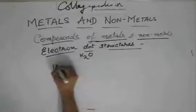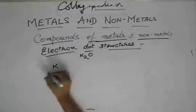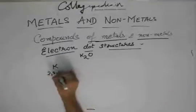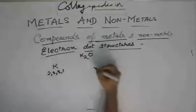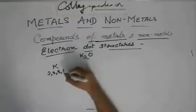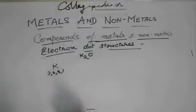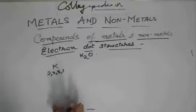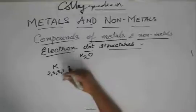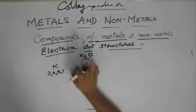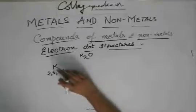So K has 19 electrons, so it's 2,8,8,1 and it can easily get rid of this one electron and make a stable configuration of 2,8,8 with 8 in its outermost orbit. And obviously it can accept 7 electrons but that requires a lot of energy so it does not happen.